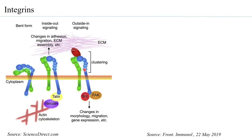In the case of outside-in signaling, there can be changes in the morphology of the cell, or changes in migration, gene expression, and so on.